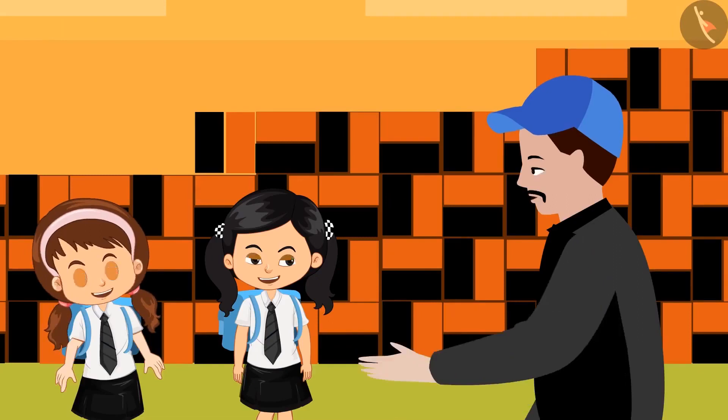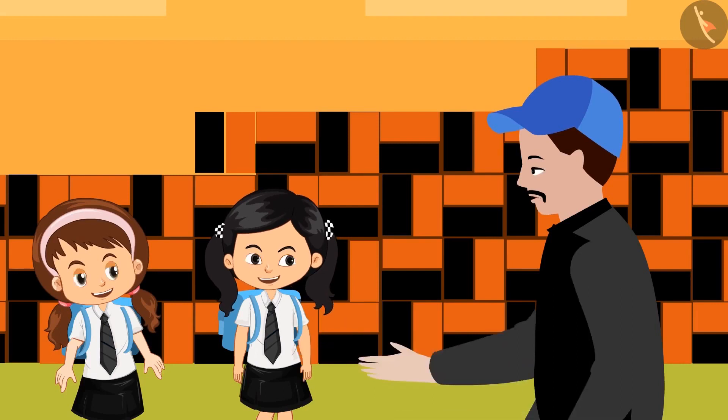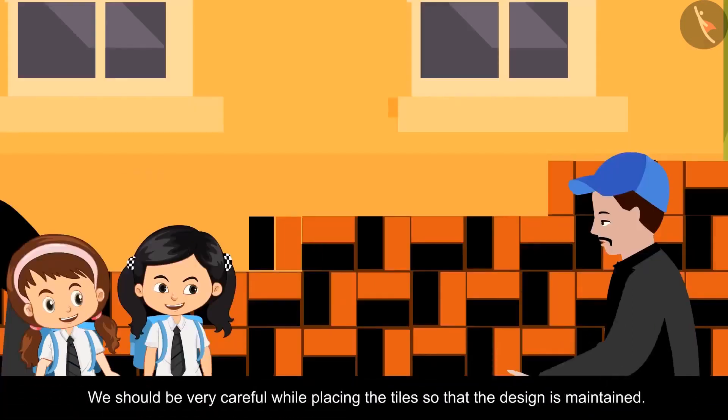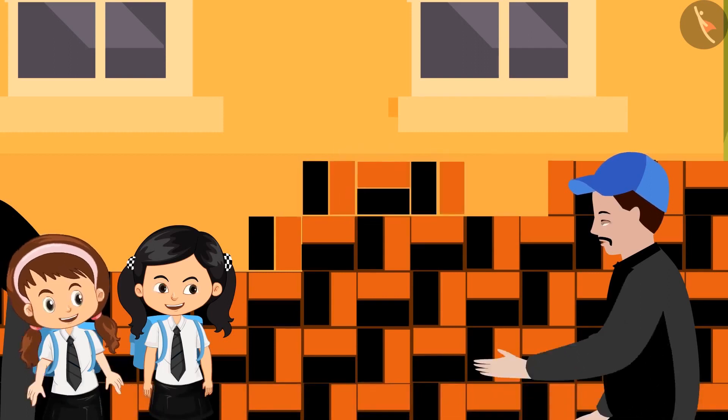Now, some of the work of this wall is left. Wow, this is a very beautiful pattern. Yes, we should be very careful while placing the tiles. While placing them, we have to make sure that the pattern is maintained throughout. Oh, like when we paint, we have to be careful. So, Mehak, look at this pattern very carefully. And tell me, should I place this tile vertically or horizontally?